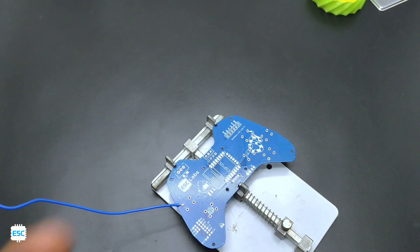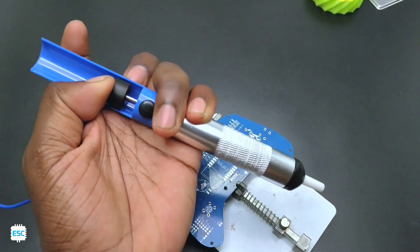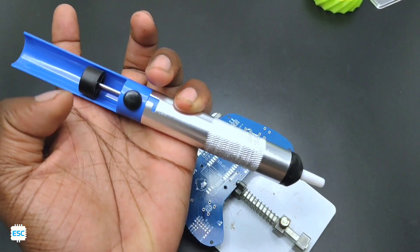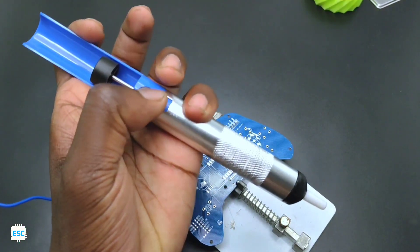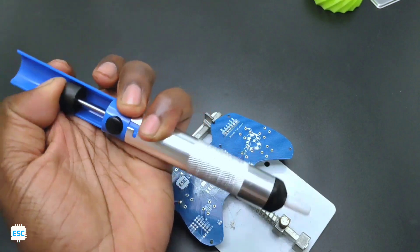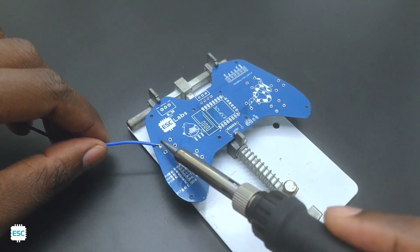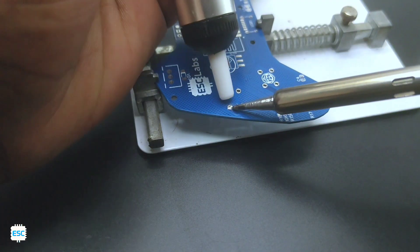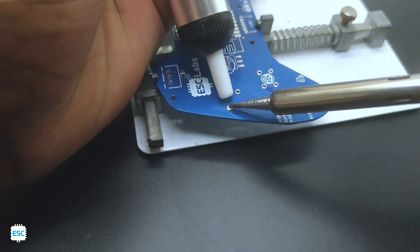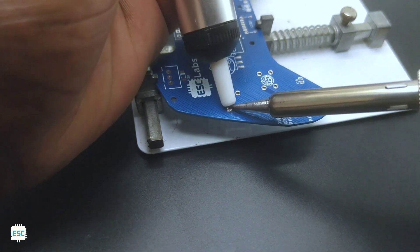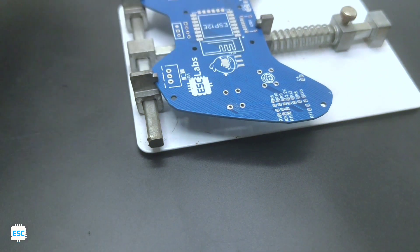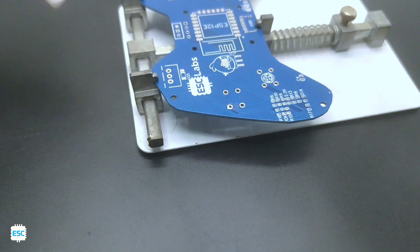Now let's see how to desolder. For that load the desolder pump like this, and the black switch is used to release. Now first remove the wire using soldering iron, then heat up and melt the remaining solder using soldering iron. At the same time place the desolder pump and release. So the pump will suck all the melted solder and that's it.